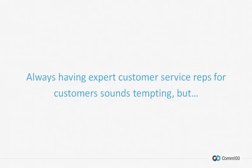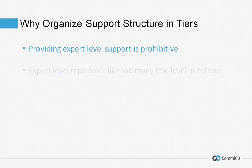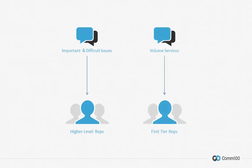Always having an expert technical support or customer service reps for customers sounds tempting, but the cost associated with this level of support can be prohibitive. And expert level reps usually do not want to answer too many repetitive low level questions. Thus, the support structure of companies is usually organized in tiers, so that higher level reps can focus on important customers and difficult issues, and first tier reps can provide volume services.